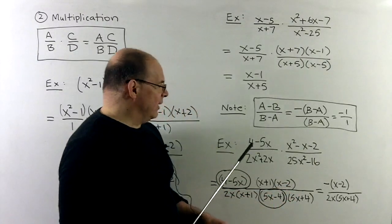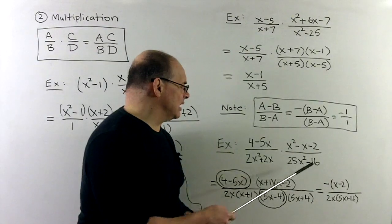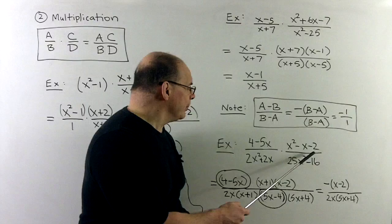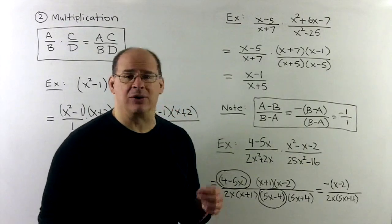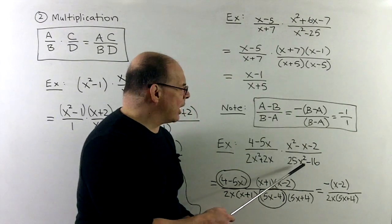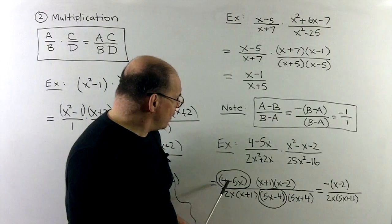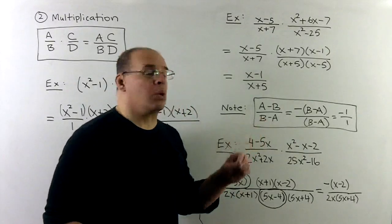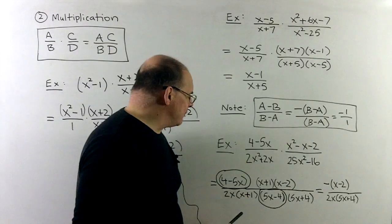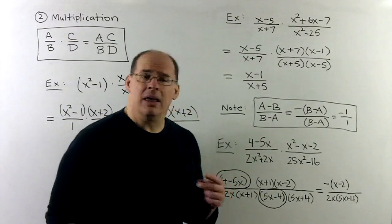So, let's look at an example of this. If we have 4 minus 5x over 2x squared plus 2x times x squared minus x minus 2 over 25x squared minus 16. A lot of things going on here. Let's take a look. The x squared minus x minus 2 factors as x plus 1, x minus 2. The 2x squared plus 2x, that has a greatest common factor of a 2x. That'll leave an x plus 1. That's good, because they'll cancel. Then we have a difference of two squares. 25x squared minus 16, that goes to 5x minus 4, 5x plus 4. We note, we have our 4 minus 5x over 5x minus 4. I could use this rule to just turn that into a minus 1. So, these terms cancel, but I collect a minus sign on the other side. Then what's going to be left over, the x plus 1's go. So, the numerator, we have an x minus 2. The denominator, we have the 2x and the 5x plus 4. That's as far as that's going to go.